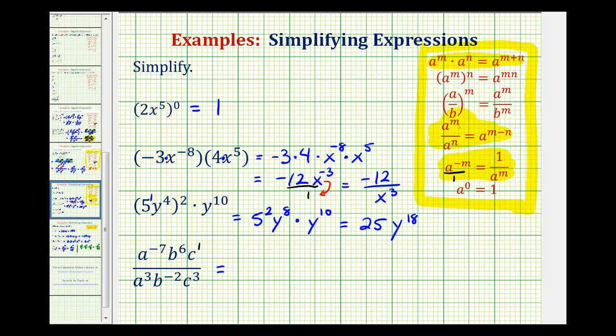Notice how it's always going to be the exponent of the numerator minus the exponent of the denominator. So we're going to have a to the power of negative seven minus three, that's negative ten. B to the power of six minus negative two, that'll become six plus two, that'll be eight. And then c to the power of one minus three is negative two.